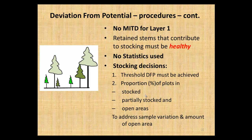Stocking decisions have two aspects similar to single-entry dispersed retention. The first is that the threshold DFP value must be achieved - usually either a single-digit value or a percent like 0.2 or 20 percent. The second decision is the proportion of plots within the stocking categories. The main reason for these proportions is to address sample variation and the amount of open area within retention blocks.